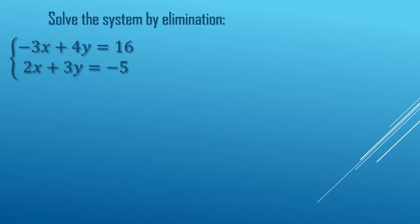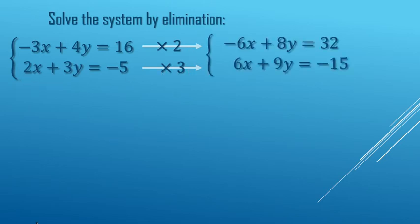We are going to be using a least common multiple type idea. So in order to eliminate the x's, we're going to multiply the top equation by 2 and the bottom equation times 3. Here's what that looks like.